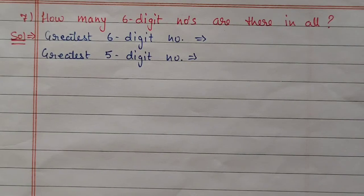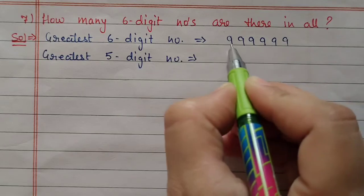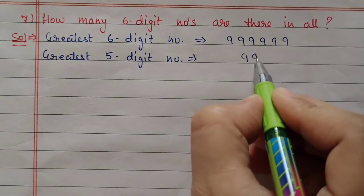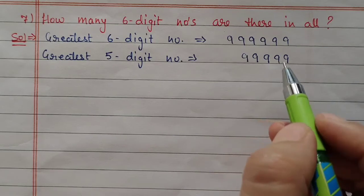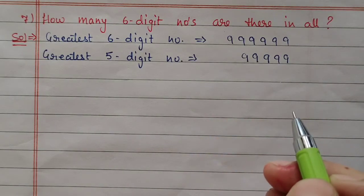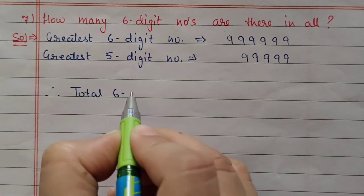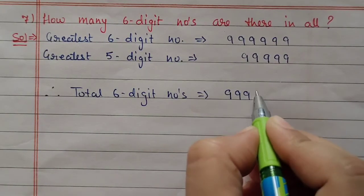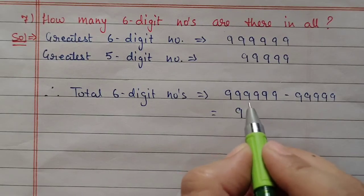Next question number 7: how many 6-digit numbers are there in all? First we will find the greatest 6-digit number, which is 999999. Then we check the greatest 5-digit number, which is 99999. After the greatest 5-digit number, 6-digit numbers start. So if we take the difference between these two numbers, we will get the total 6-digit numbers. After subtraction we will get 900000.